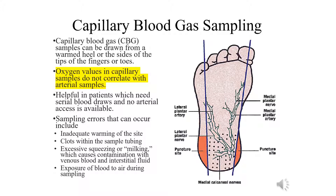Pulse oximetry is the preferred method for assessing oxygenation in pediatrics. For neonates, when an arterial catheter is in place, arterial blood gas sampling is the best method for assessing both oxygenation and ventilation. If you do not have an arterial catheter in place, then for a neonate, a capillary gas to assess ventilation would be appropriate, and a pulse oximeter for assessing oxygenation would be appropriate.